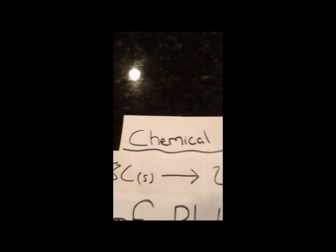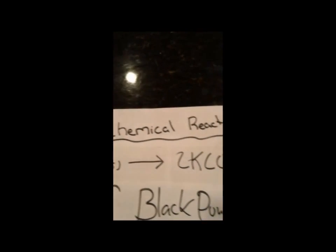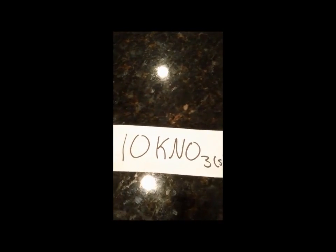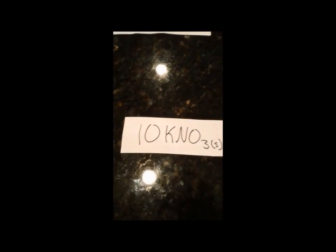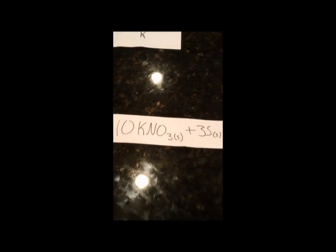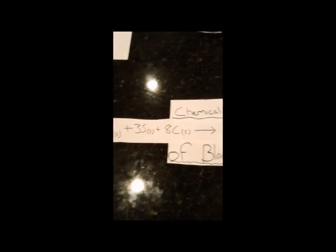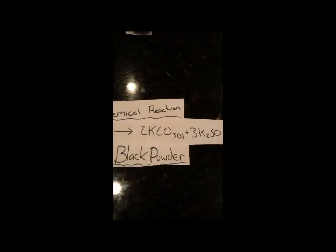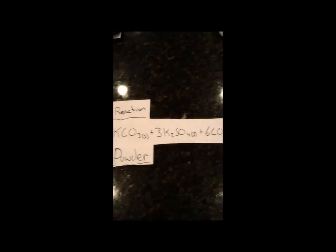The chemical equation of black powder shows us that when potassium nitrate reacts with sulfur and carbon, it produces potassium carbonate, potassium sulfate, carbon dioxide, and nitrogen gas.